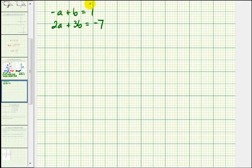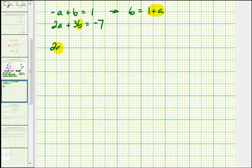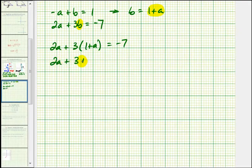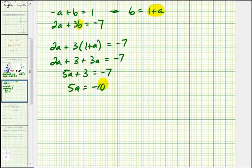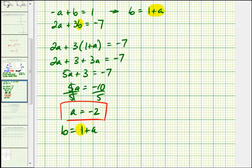Let's go ahead and solve this first equation for b. We'll add a to both sides of the equation, so this gives us b equals one plus a, which means we can substitute a plus one for b in the second equation. That gives us two a plus three times one plus a equals negative seven. We have two a plus three plus three a equals negative seven. Combining like terms, five a plus three equals negative seven. Subtract three on both sides, divide by five, so a equals negative two. And since b equals one plus a, b is equal to one plus negative two, so b equals negative one.